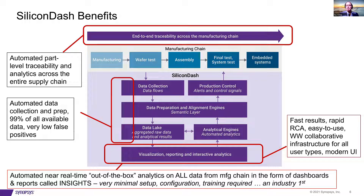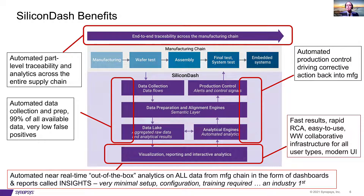Beyond analysis, Silicon Dash also supports production control — corrective action based on what you find. Once you identify an issue in manufacturing, you can send instructions back into the manufacturing chain. For example, if you want to bin out certain dies that you think are problematic outliers — ones that are passing today but might fail later in the final product — you can influence the tool and send those changes back into manufacturing.